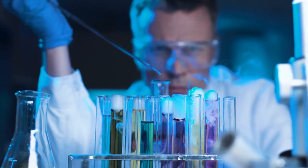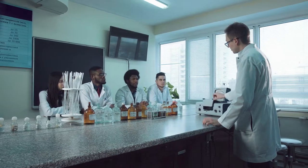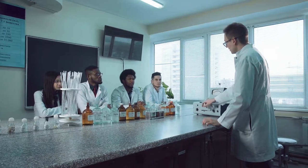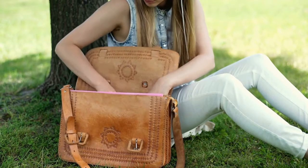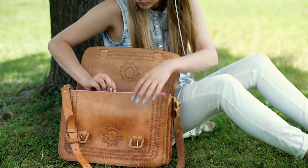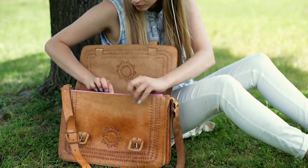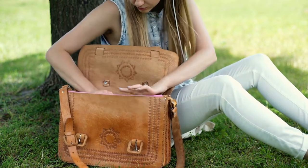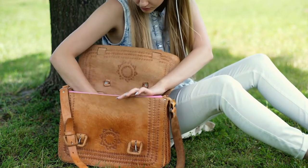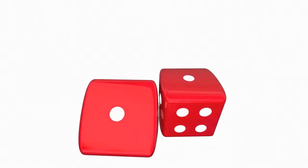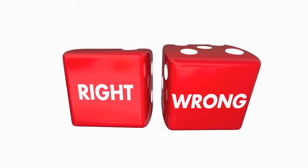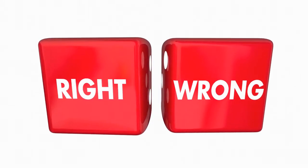A hypothesis has to be capable of being tested by an experiment, so it has to be falsifiable — otherwise it cannot be meaningfully tested. Step four is to test the hypothesis. For our example, you could simply look inside your backpack to check if your phone is there or not. This would count as testing your hypothesis.